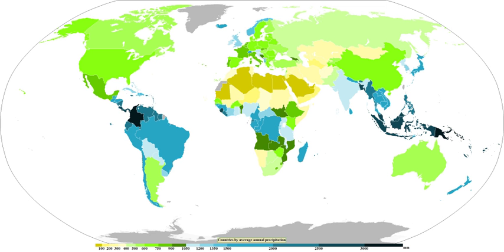Smaller drops are called cloud droplets, and their shape is spherical. As a raindrop increases in size, its shape becomes more oblate, with its largest cross-section facing the oncoming airflow. Contrary to cartoon pictures of raindrops, their shape does not resemble a teardrop. Intensity and duration of rainfall are usually inversely related: high-intensity storms are likely to be of short duration and low-intensity storms can have a long duration. Rain drops associated with melting hail tend to be larger than other rain drops. The METAR code for rain is RA, while the coding for rain showers is SHRA.